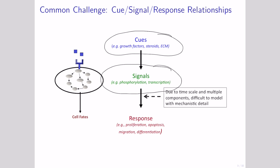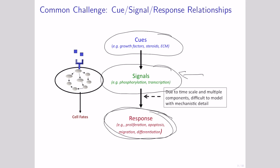We might measure a whole bunch of details about how cells are making particular decisions, then measure their response. What we end up wanting to do is take these signals that we measured and ask how they are related to the response of cells. Due to the way that biological signaling generally works, the signals that we measure are often really highly correlated with one another. So let's think about the challenges we have here, and then we can start to develop some of these methods.